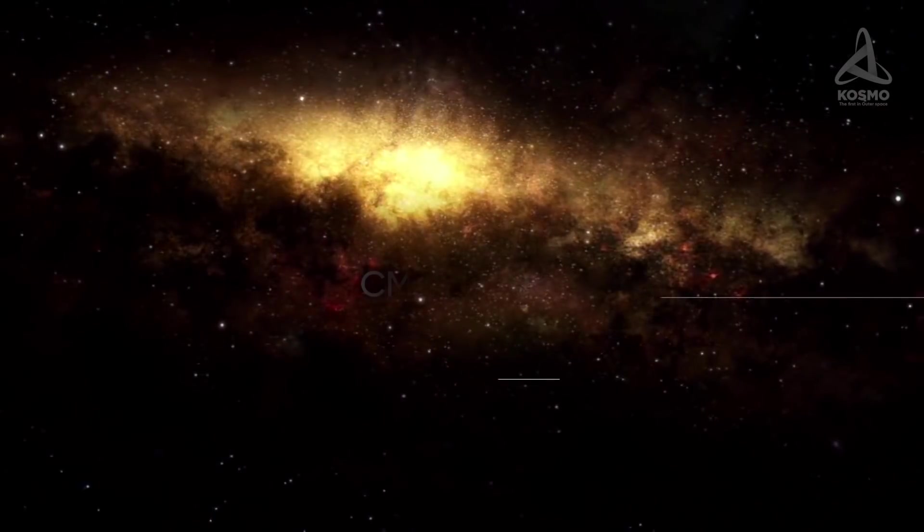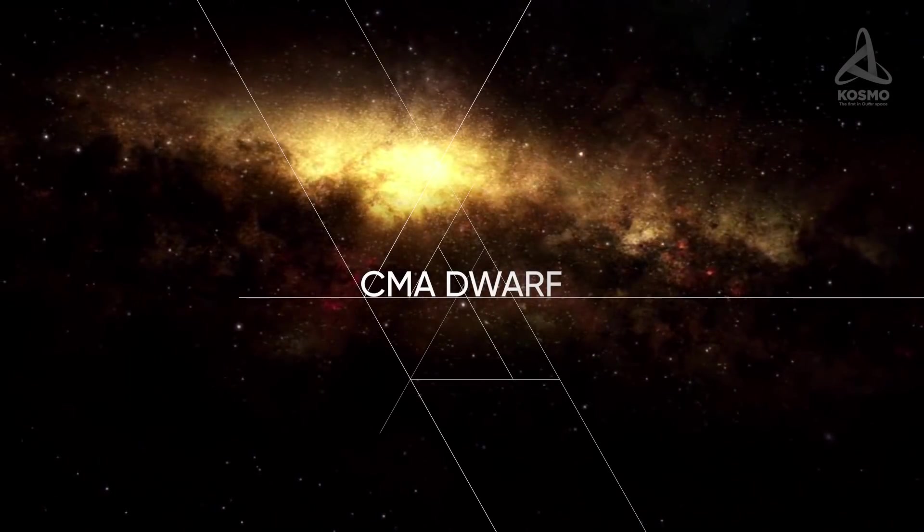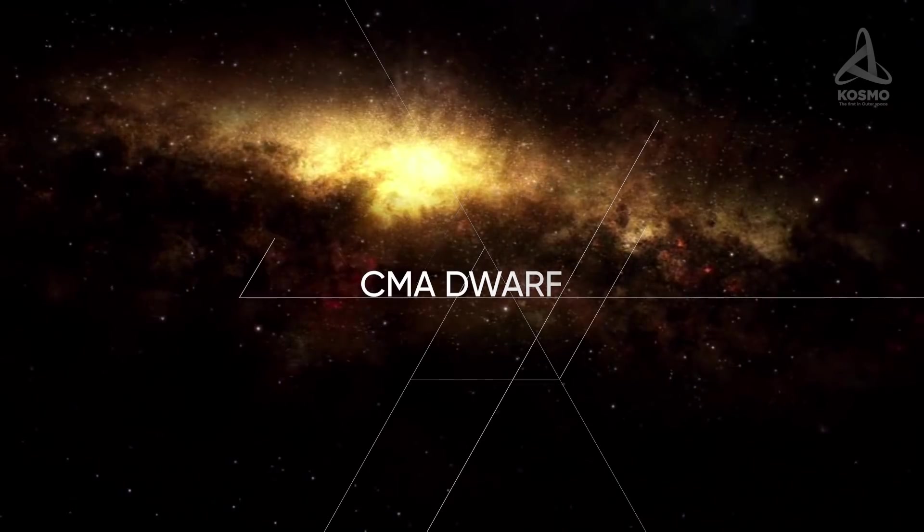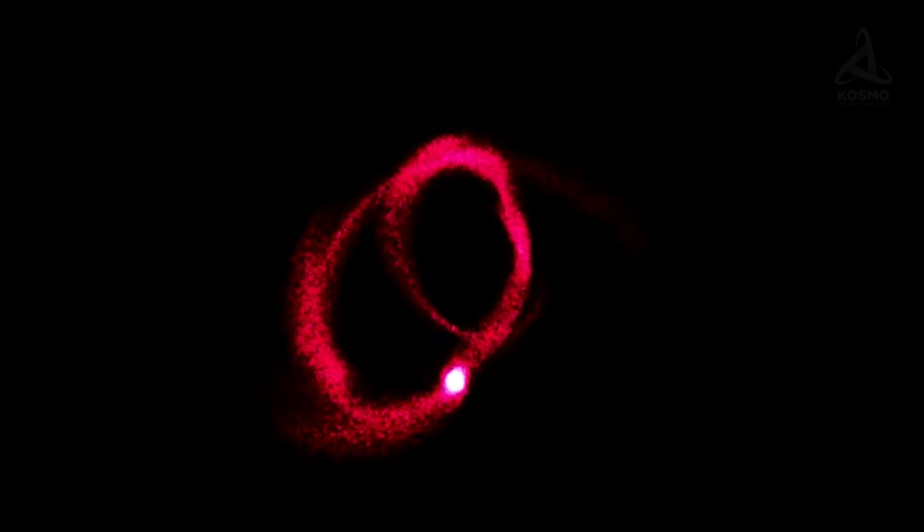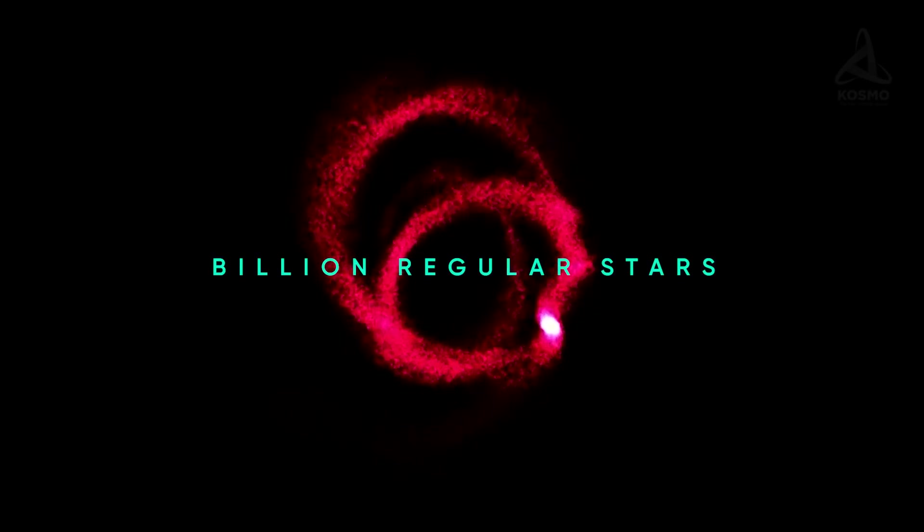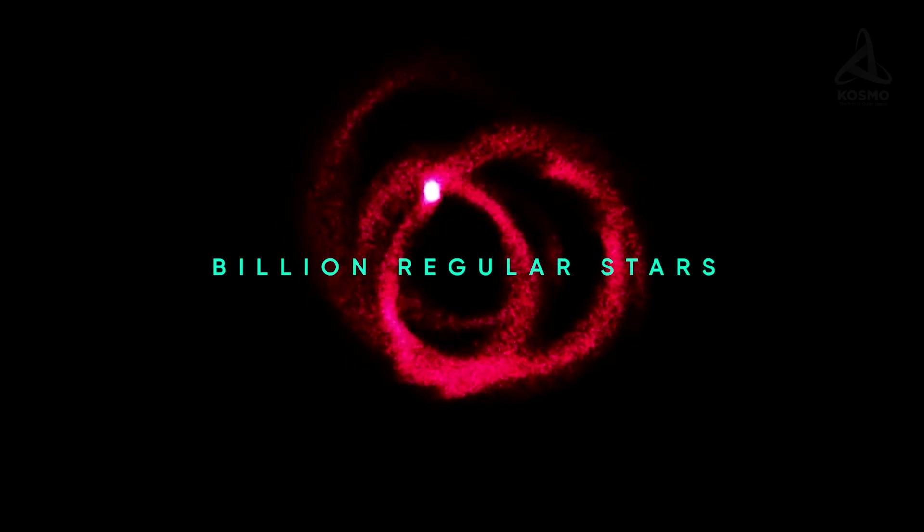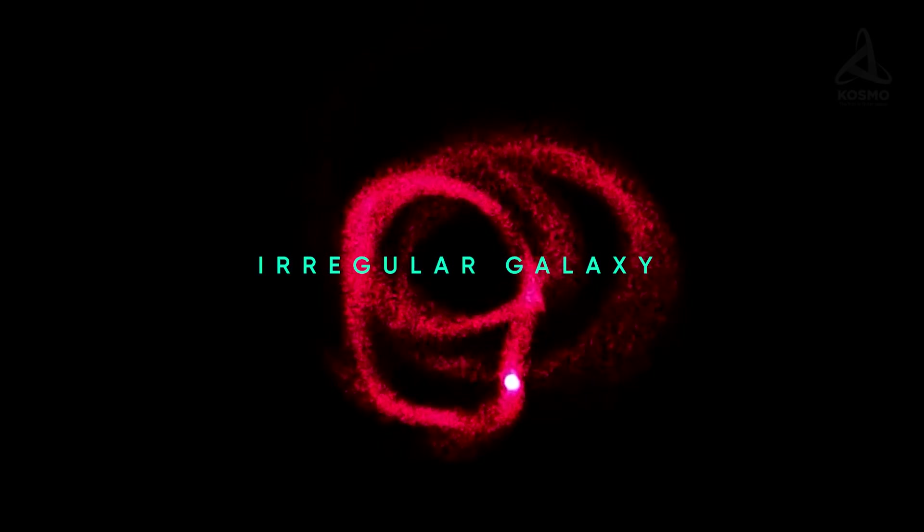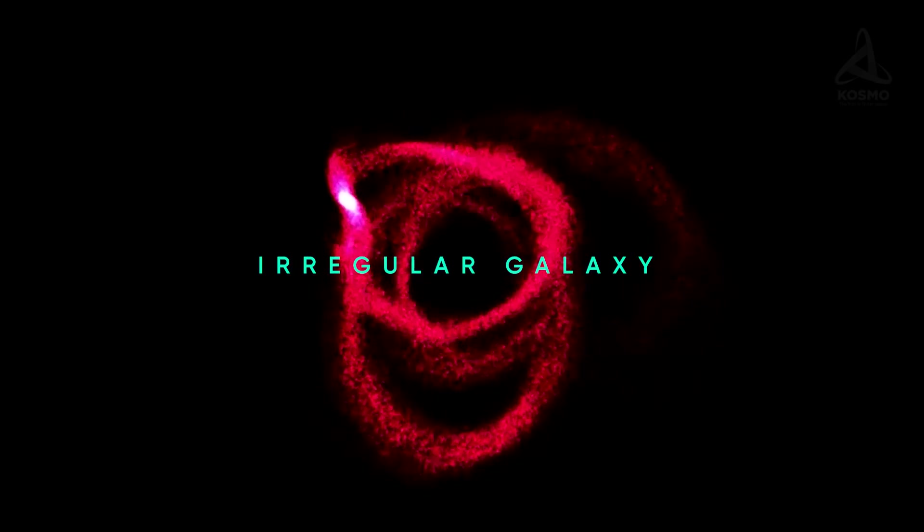As for the closest galaxy, a hypothetical Canis Major Dwarf galaxy should be named. This astronomical object belongs to the local group as well. The galaxy contains a comparatively high percentage of red giant stars and presumably a billion regular stars. It is classified as an irregular galaxy and is officially considered our nearest neighbor.